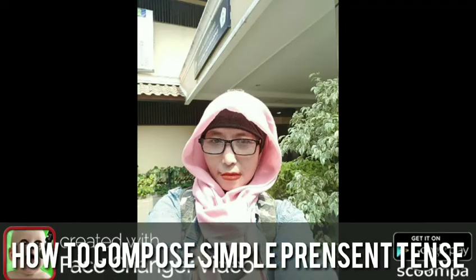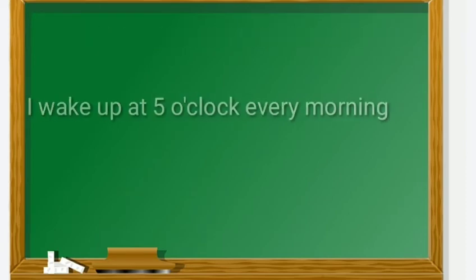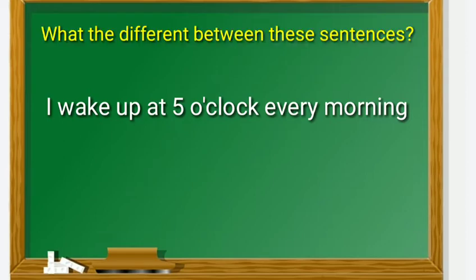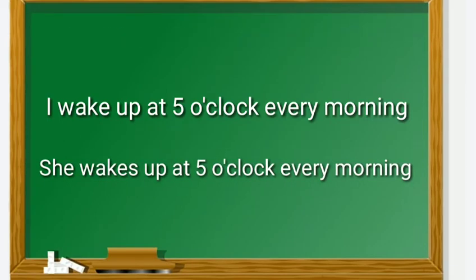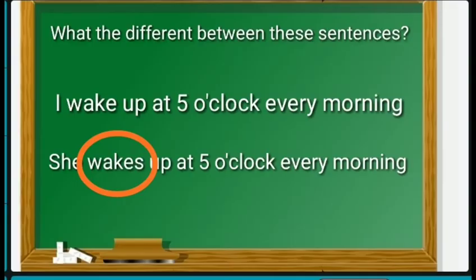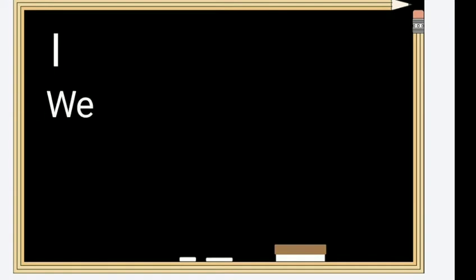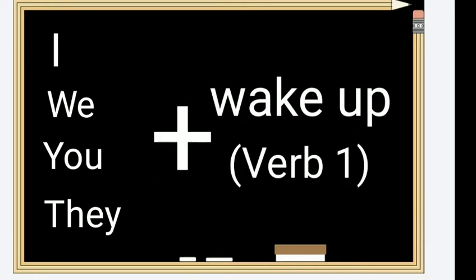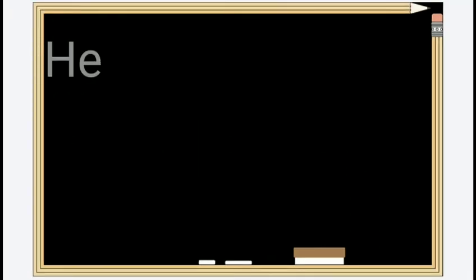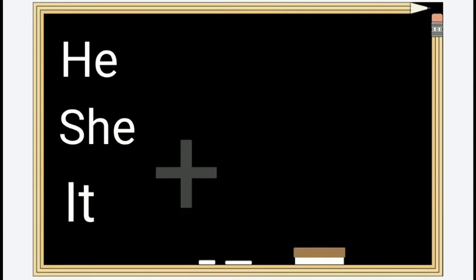You have just learned the functions of simple present tense. Now I will show you how to compose sentences with different subjects. Notice the difference: 'I wake up at five o'clock every morning' versus 'She wakes up at five o'clock every morning.' For subject 'she,' we use verb one plus S. For subjects I, you, they, we — use verb one (pure verb one). For subjects he, she, it — use verb one plus S.